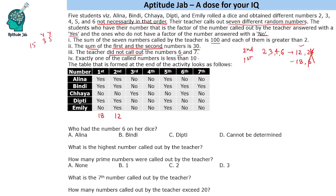Now, 12 is divisible by two, three, four, and six but not by five. This means Jaya had the number five on her dice. We are left with the remaining numbers, and we need to keep in mind that all of them are different.